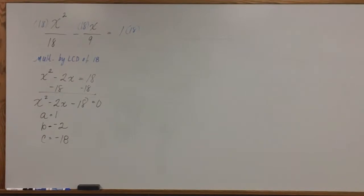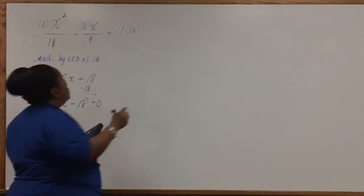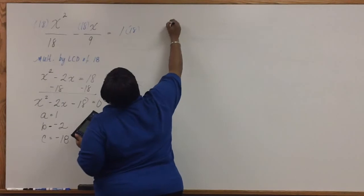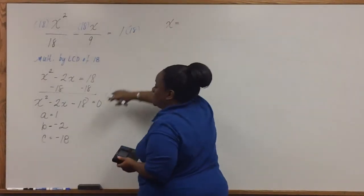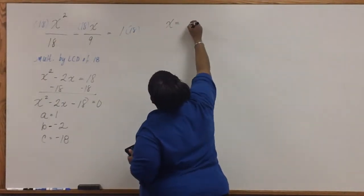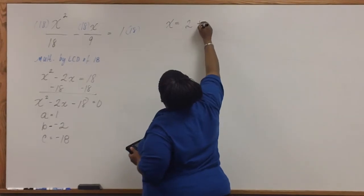Now we're ready to plug into our quadratic formula. So we have x equals, changing our sign of B, we have positive 2 plus or minus.